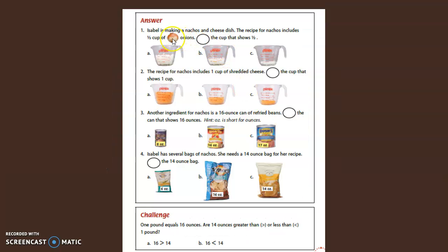Let's move on. Isabel is making a nacho and cheese dish. The recipe for nachos includes half a cup of onion. Circle the cup that shows one-half.